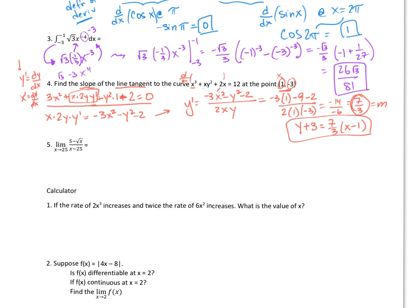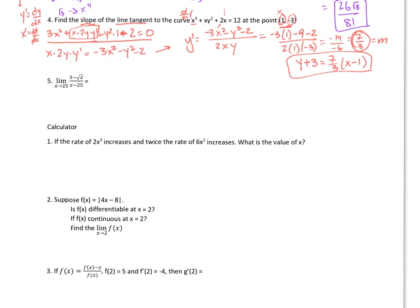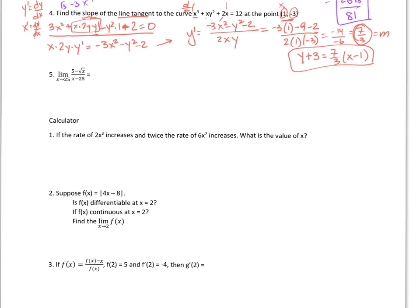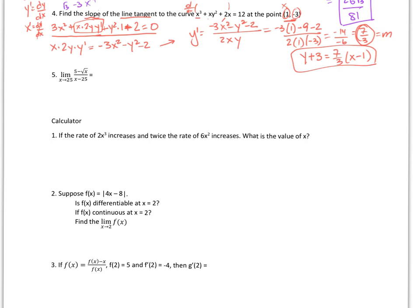For number 5, we have the limit as x goes to 25 of 5 minus root x over x minus 25. We always start with direct substitution, but plugging in gives 0 at the bottom and 0 at the top — indeterminate. Later you'll learn a shortcut for these, but here's what to do. This is a trick problem.